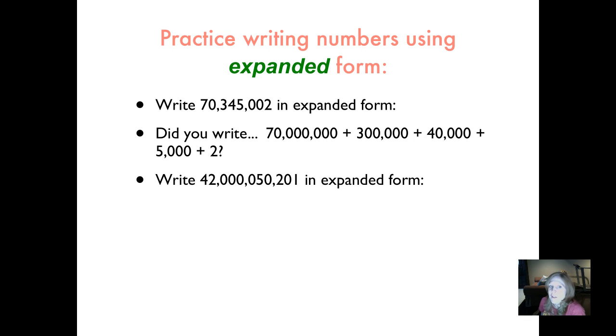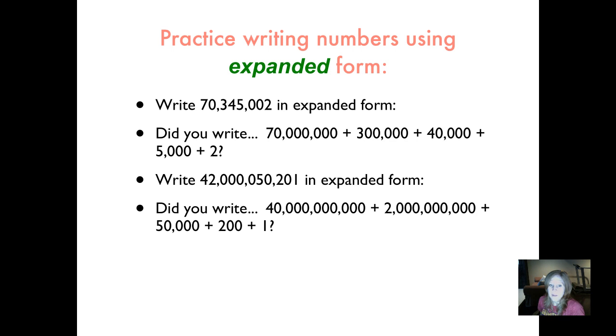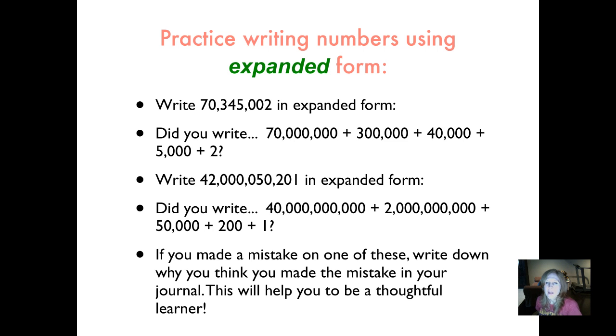Now let's write 42,050,201 in expanded form. This is a good opportunity for you to practice reading these numbers, too. Did you write 40 billion plus 2 billion plus 50,000 plus 200 plus 1? Again, that's a huge number. If you made a mistake on any of these, write down why you think you made the mistake in your journal. This is going to help you to be a more thoughtful learner in the future. And it will also help you when you come back to class because you can ask me questions and I'll be able to answer them.